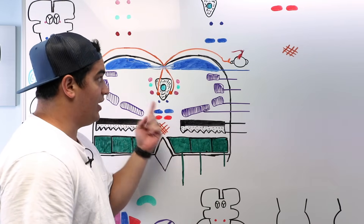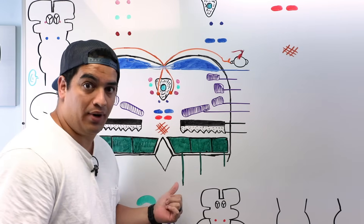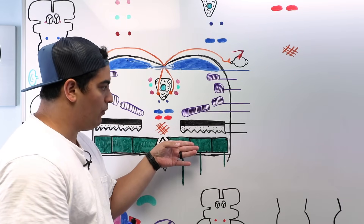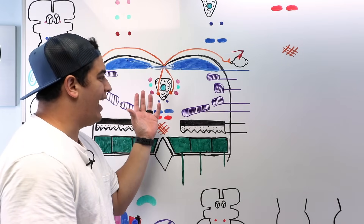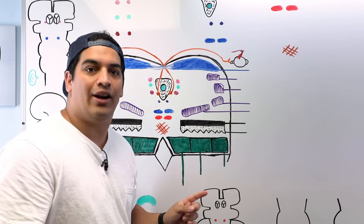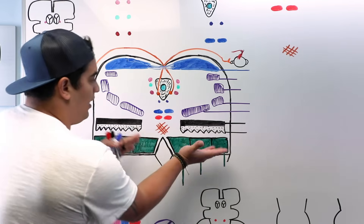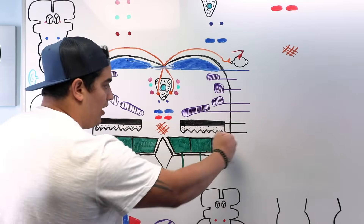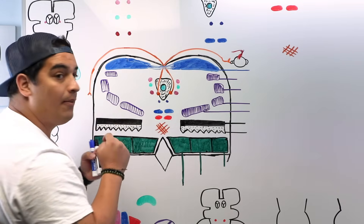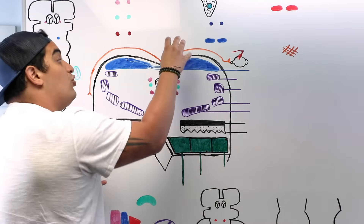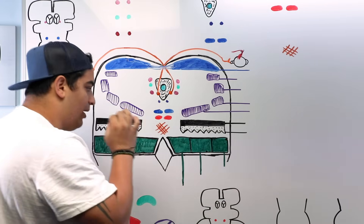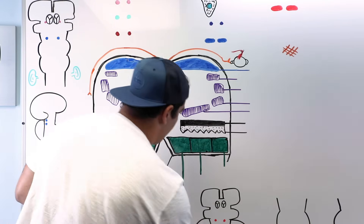Now we're looking at the cross section at the level of the inferior colliculus. We'll annotate all the structures — their names and overall anatomical positioning — and then go through other diagrams to cover their function. The green portion is on the ventral part of the midbrain; the two bumps in the back are the inferior colliculi on the dorsal portion.